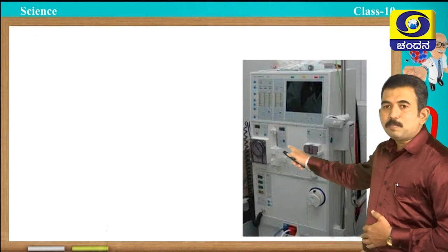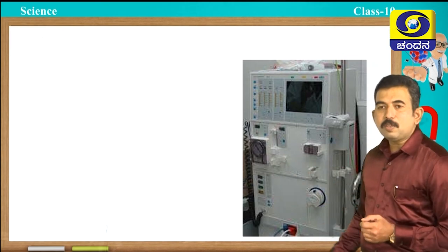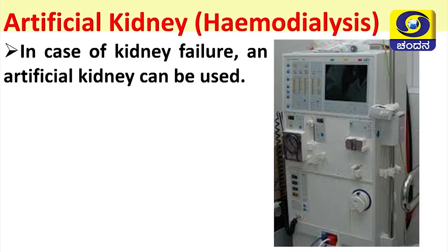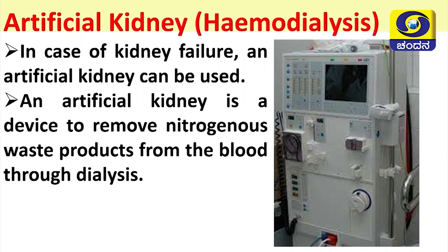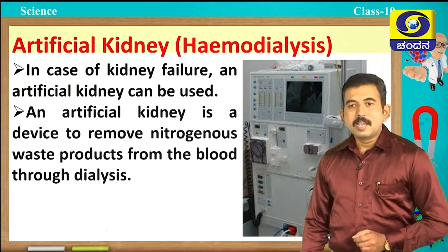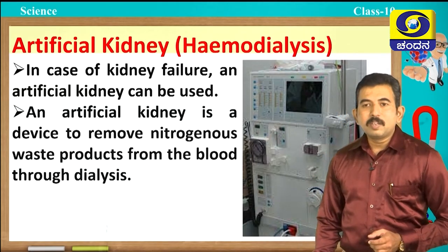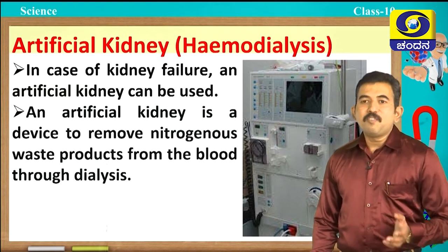You can observe a picture of a machine used in case of kidney failure. This artificial kidney is used to remove nitrogenous waste products from the blood through a process called dialysis — also known as hemodialysis. This machine is used in hospitals for treatment of patients whose kidneys have completely failed.